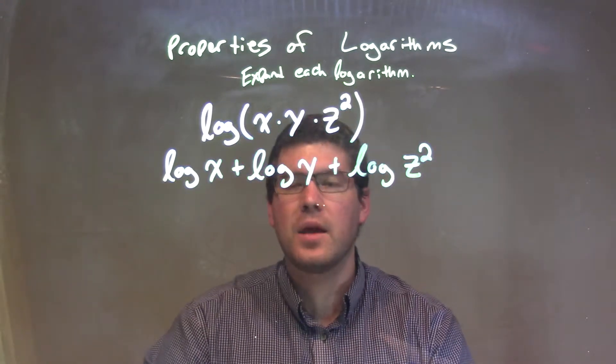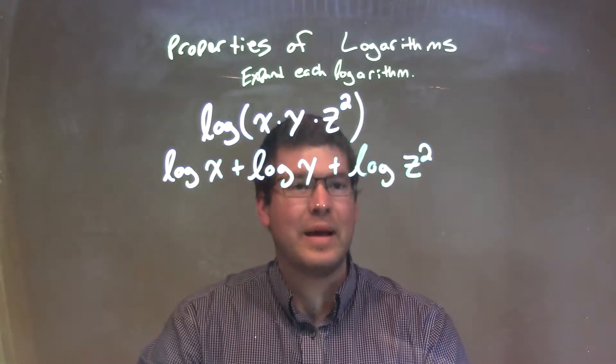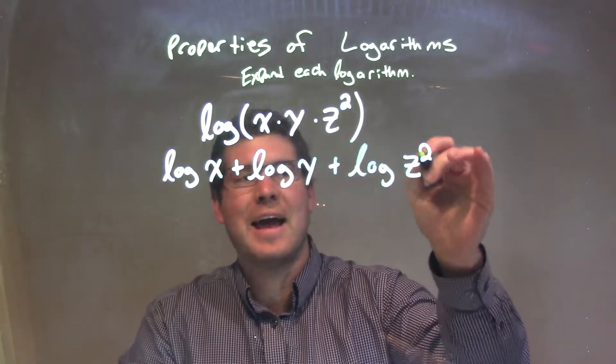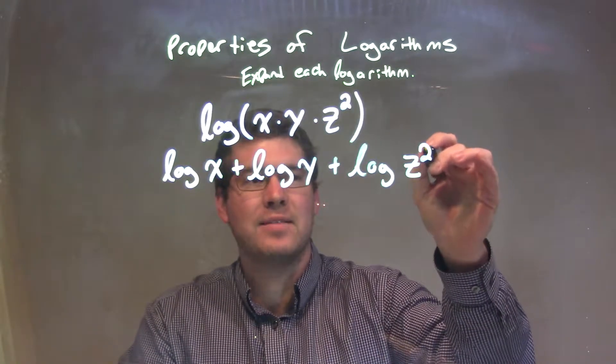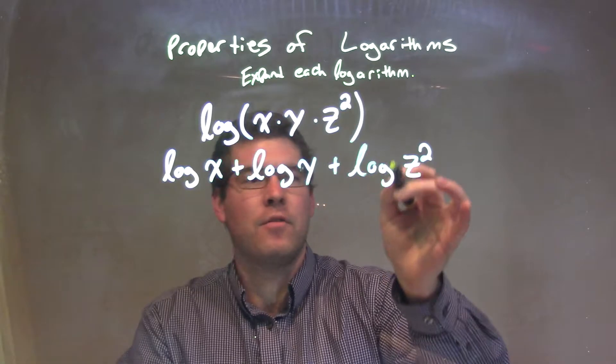Log of z squared. Now we're almost done with our full expansion here. The only thing I'm seeing is that exponent, the z to the second power. That second power can come out in front of this specific log.